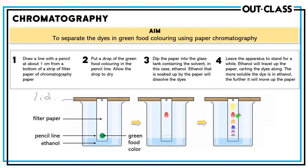We hang the filter paper so that the start line is above the solvent level. Before hanging it, we place a spot of the mixture on the start line using a dropper or a capillary tube to put a fine drop of the mixture on the start line. Then we hang it in the chromatography tank. Set up the apparatus as shown in the diagram — the lid, the tank, the start line, the spot of the mixture, and the solvent should all be labelled.